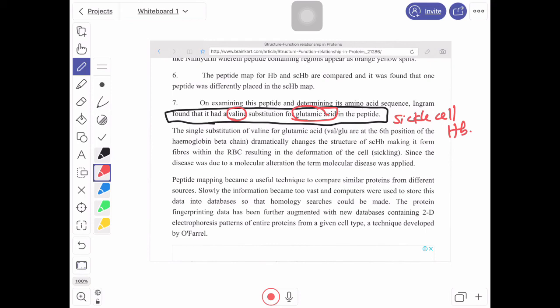This was led to the discovery of molecular change behind the disease sickle cell anemia. That single substitution of valine for glutamic acid at sixth position of the hemoglobin leads to change in the structure of sickle cell hemoglobin and make it more fibrous. That results in the deformity in the RBC.